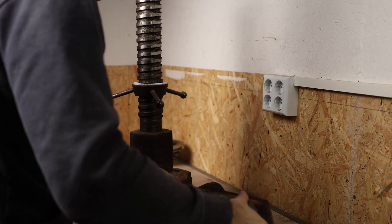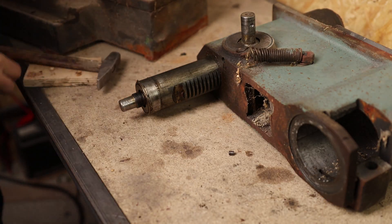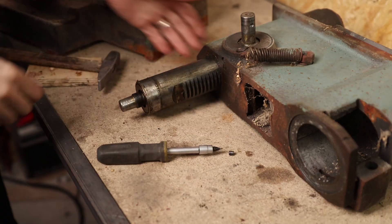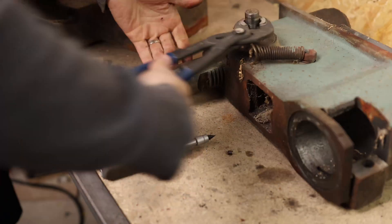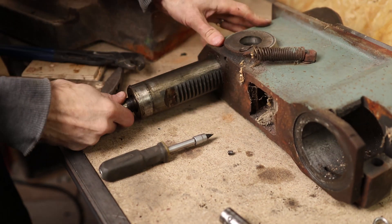Next I will remove quill and change spindle bearings. You can only remove quill pinion shaft in one position. After removing shaft you can take out the quill.